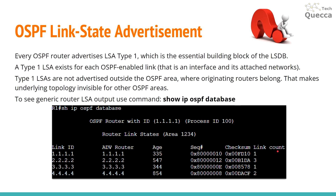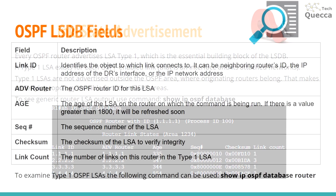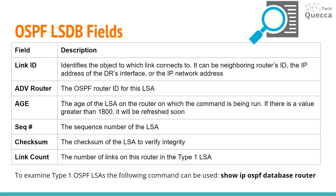Let's see what these fields mean. First, link ID — it identifies the object to which the link connects. It can be the neighboring router's ID, the IP address of the DR's interface, or the IP network address. ADV Router is the OSPF router ID for this LSA.